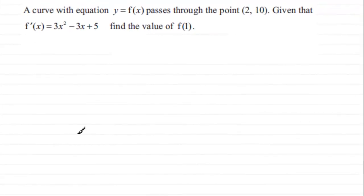Now in this question we're given a curve with equation y equals some function of x, and we're told that it passes through the point (2, 10). Given that f'(x), the first differential, equals 3x² - 3x + 5, we've got to find the value of f(1).